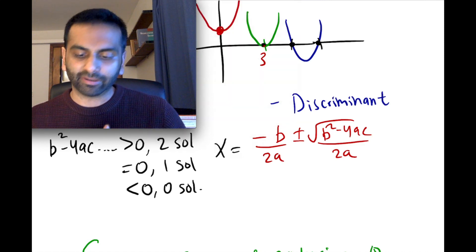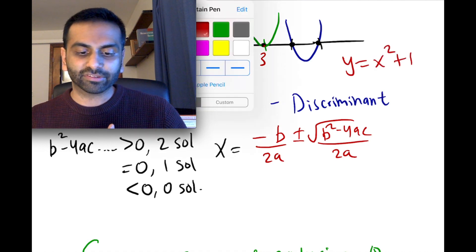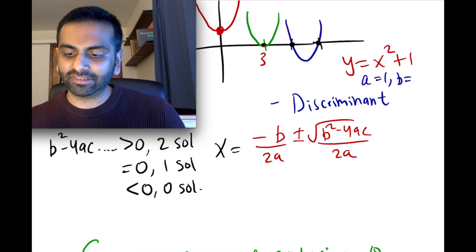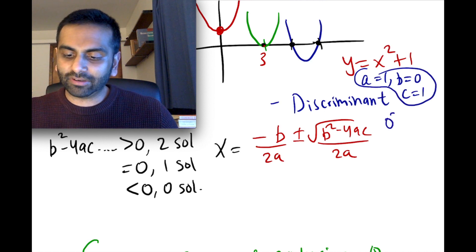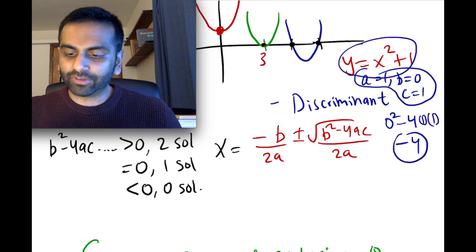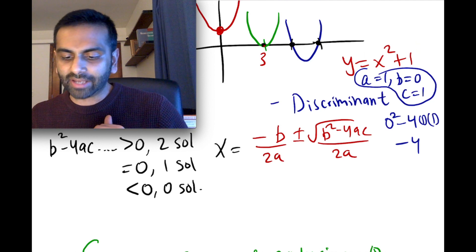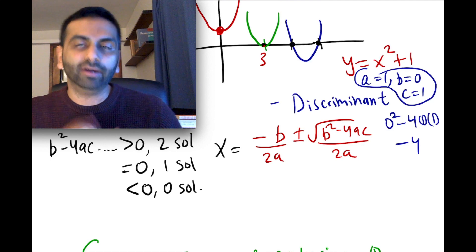Looking at the earlier example of y equals x squared plus one, if we were to find the zeros using the quadratic formula: a equals 1, b equals 0 because there's no x term, and c equals 1. The discriminant b squared minus 4ac is zero squared minus 4 times 1 times 1, which is zero minus four, so negative four. Just looking at that b squared minus 4ac and knowing its sign tells you how many solutions there are to the quadratic equation.